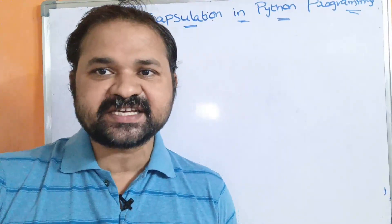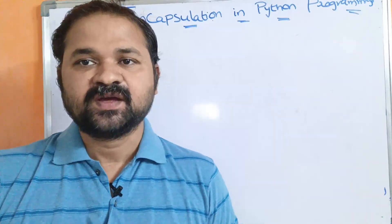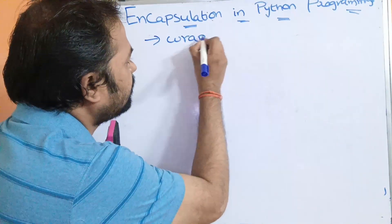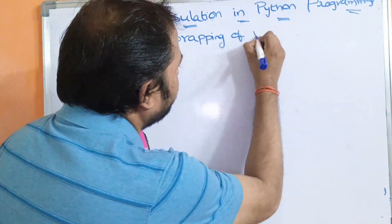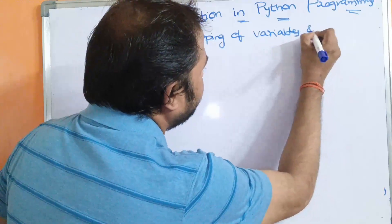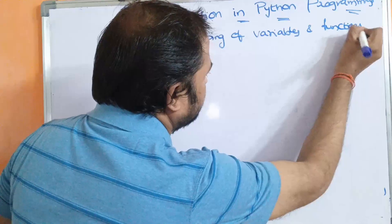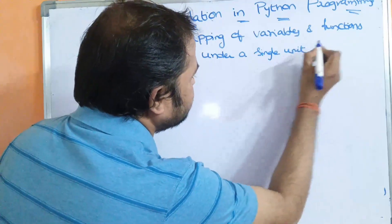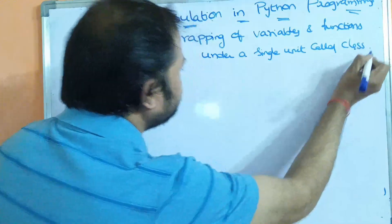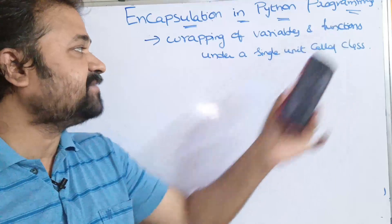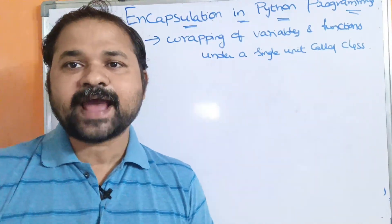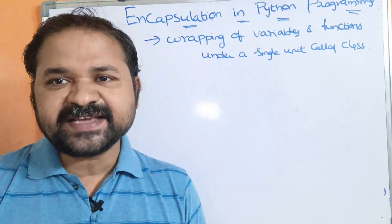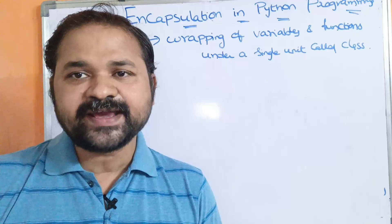In this video, we are going to discuss encapsulation in Python programming. Encapsulation means the wrapping up of variables and functions under a single unit called class. So, what is encapsulation? The wrapping up of variables and functions under a single unit called class. Wrapping means combining. Combining variables and functions is called encapsulation. If we place variables and functions in a class, then it is called encapsulation.